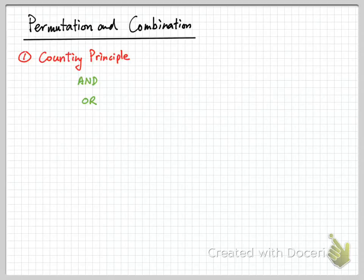We are going to talk about the idea of permutation and combination. Before we go into the detail of permutation or combination, let's revisit a very important concept — what we call the counting principle.